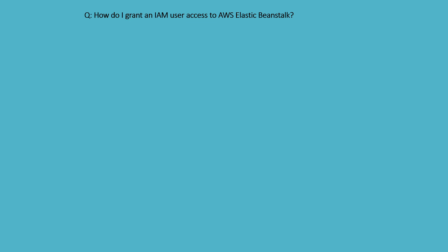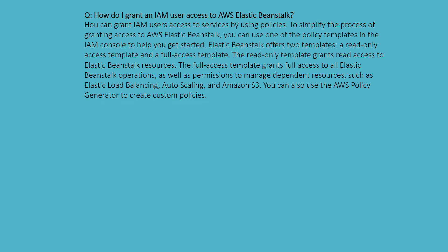How do I grant IAM users access to AWS Elastic Beanstalk? You can grant access to services by using policies. To simplify the process, you can use one of the policy templates in the IAM console to get started. Elastic Beanstalk offers two templates: a read-only access template and a full access template. The read-only template grants read-only access to Elastic Beanstalk resources, while the full access template grants full access to all Elastic Beanstalk operations as well as permission to manage dependent resources such as Elastic Load Balancing, Auto Scaling, and Amazon S3. You can also use the AWS Policy Generator to create a custom policy.